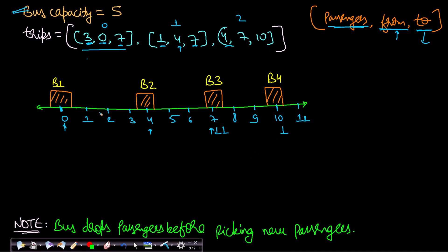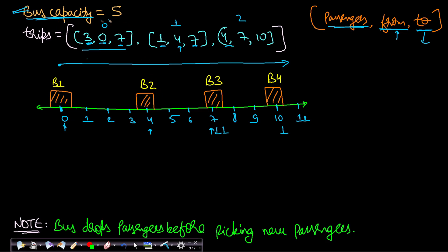The third trip is four passengers getting in at seven and getting out at ten. The question is: can the bus start from zero, keep moving due east in one direction, and — with the given capacity — pick up all passengers and drop them all off at their given stops? If it can do that without running out of bus capacity, return true; otherwise return false.